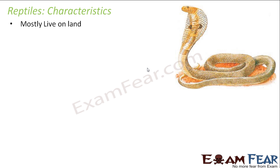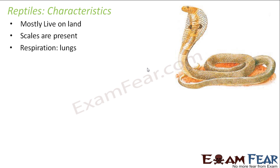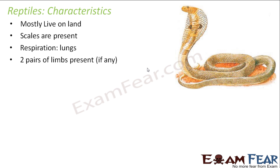Let us look at the basic characteristics. They mostly live on land, however sometimes they might be seen in water as well. Scales are present on their bodies. Respiration happens through lungs because they spend most of their time on land. Two pairs of limbs are present if any — it is not necessary for reptiles that limbs will always be present. One example is snake, where you do not see four limbs.